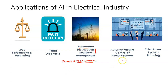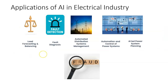The next application I want to talk about is automation and control of power systems. Fuzzy logic is used extensively in controlling and automating power systems. Fuzzy logic can be thought of as a many-valued logic, as compared to Boolean logic which typically has only two values — zero and one.